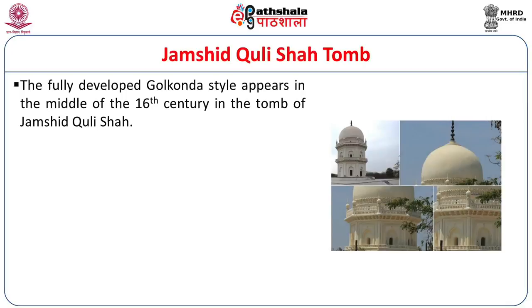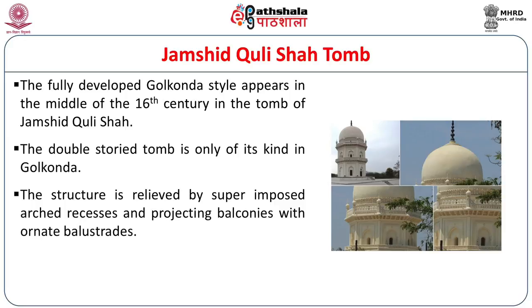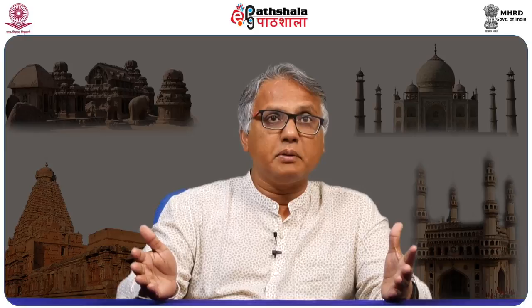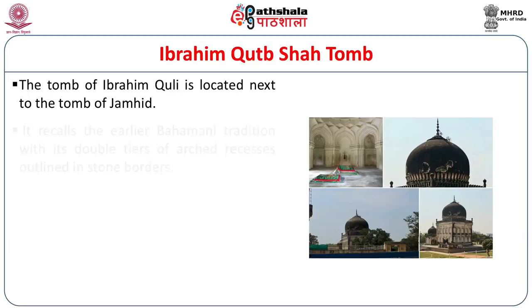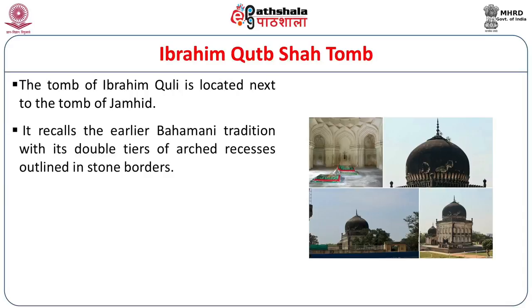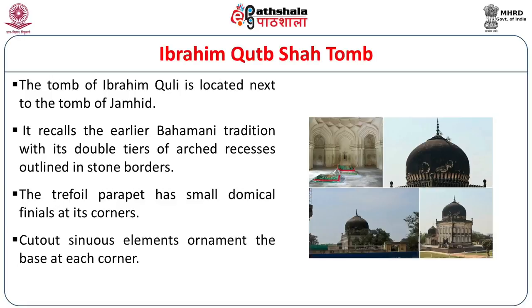Jamshid Kuli Qutub Shah's tomb is fully developed in Golconda style. It is a double-storied tomb, the only one of its kind in Golconda, of octagonal shape built in the 16th century. It is relieved by superimposed arch recesses and projecting balconies with ornate balustrades, and is the only tomb without any inscription. Ibrahim Qutub Shah's tomb is located next to Jamshid's. It recalls the earlier Bahamani tradition with its double tiers of arch recesses outlined in stone borders; the trefoil parapet has small domical finials at its corners, and cut-out sinuous elements ornament the base.